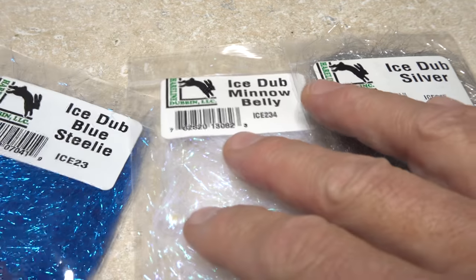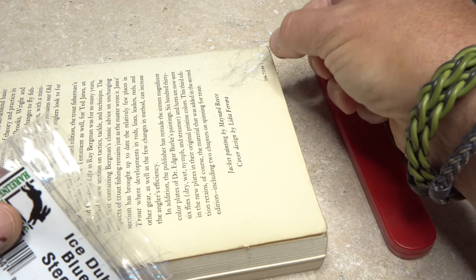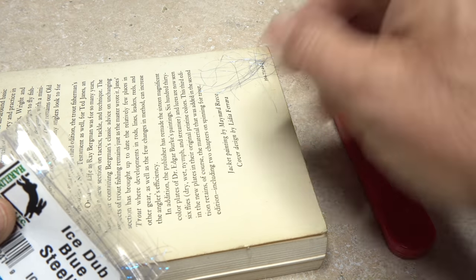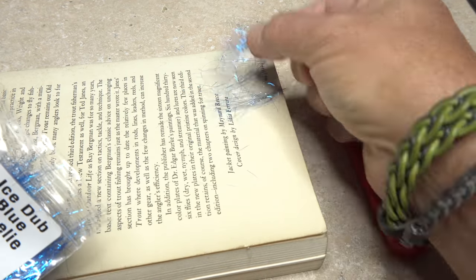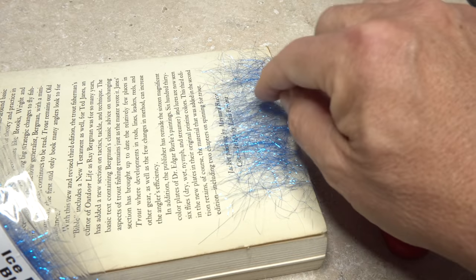I've chosen steely blue ice dub for the primary color of this fly. Pull small slips of dubbing from the packet and lay them perpendicular to one of the book edges. You want to go about the same length as the jaws of your chip clip. Try to make a nice, even, but fairly sparse layer.